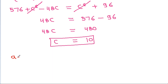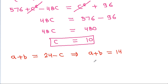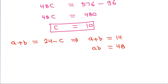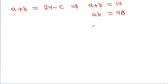We have A plus B equal to 24 minus C, which gives A plus B equal to 14, and we have AB equal to 48. So we have the sum of A and B and the product of A and B. The quadratic equation having roots A and B will be x squared minus 14x plus 48 equals zero.